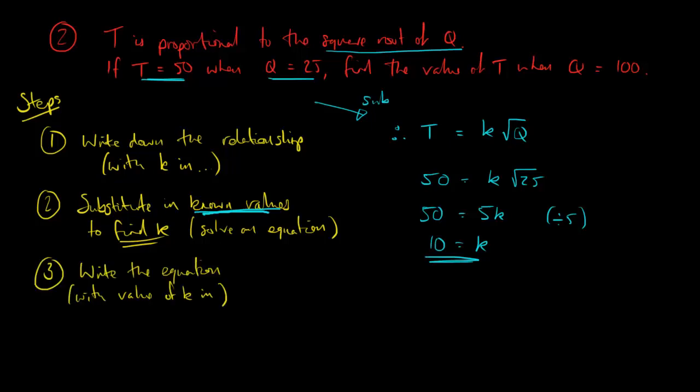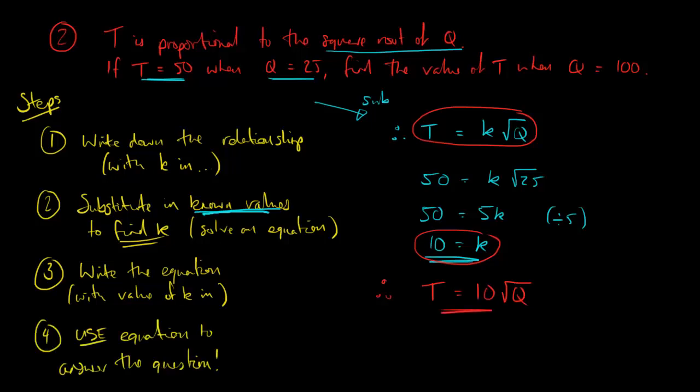I know that t is equal to k times the square root of q, and I now know that k is equal to 10. So that means that t is equal to 10 times the square root of q. This is the key to answering the rest of the question now. I can use this in step four to answer it.